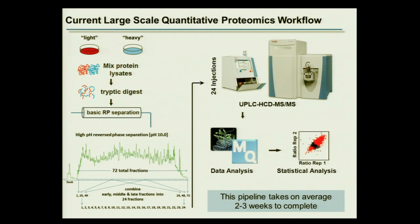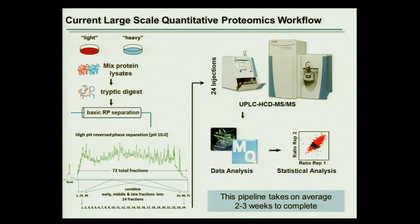This is our current large-scale quantitative proteomics workflow for proteome-level analyses. Starting with either iTRAQ or SILAC, you isolate and mix proteins, generate peptides, and then perform fractionation to increase depth of coverage — typically generating 24 fractions using basic reversed-phase pH chromatography offline. Each fraction is individually injected into the mass spectrometer. Data analysis is done with either MaxQuant or SpectrumMill, followed by statistical analyses. This pipeline takes about two to three weeks on average.